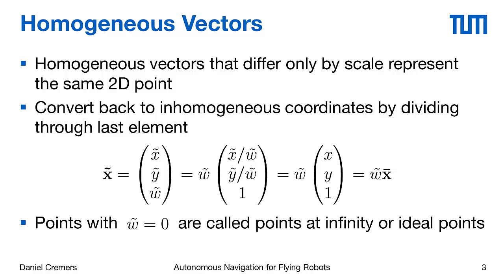We can then convert back from homogeneous to inhomogeneous coordinates simply by dividing through the last element. So if you have a homogeneous vector with components x-tilde, y-tilde, and w-tilde, dividing by the last component w-tilde gives you back the 2D coordinates x and y. In particular, w-tilde can become 0. If we let w-tilde go to 0, the point coordinates x and y move towards infinity. For w-tilde equals 0, these points are called points at infinity or ideal points, and they represent a direction in space.